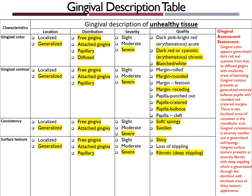My gingival assessment statement reads as follows. Gingival color appears generalized dark red and cyanotic from free gingiva to diffused with moderate areas of blanching. Gingival contour presents as generalized severely bulbous papilla with rounded and cratered margins. There is also localized areas of recession in the mandibular arch. Gingival consistency is severely swollen and is generalized soft and spongy. Gingival surface texture presents as severely fibrotic with deep stippling, which is generalized throughout the dentition with localized areas of a shiny surface texture appearance.